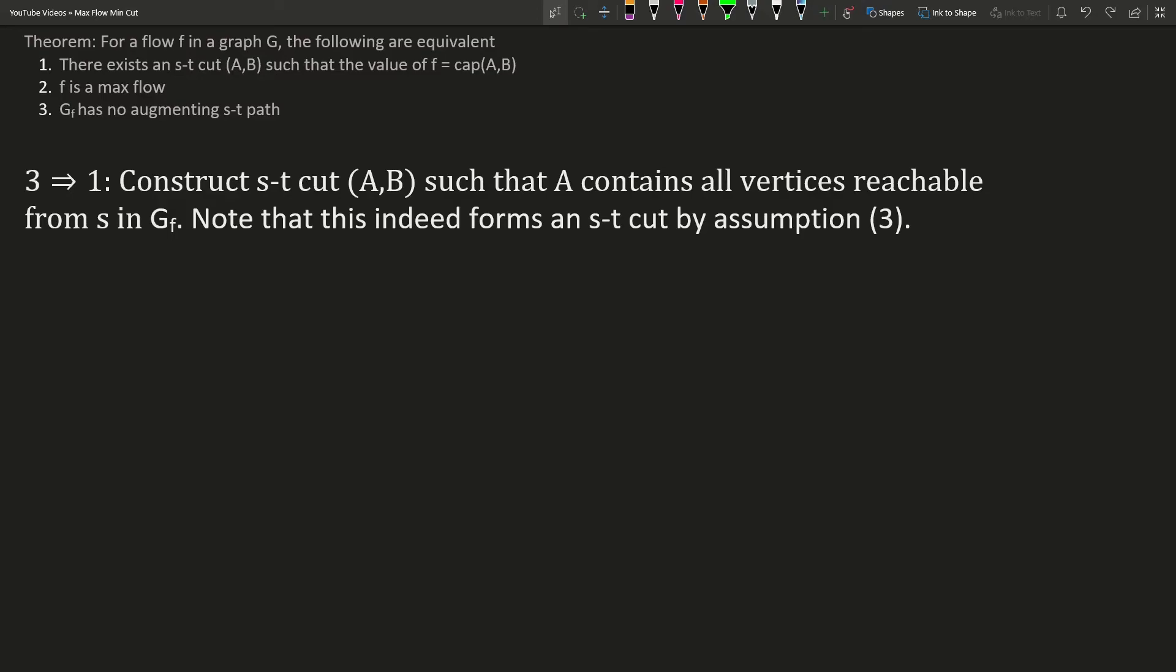Note that this partition is indeed an ST cut, because by assumption there is no augmenting ST path in the residual graph, so the sink is not reachable from the source. Together with the fact that the source is trivially reachable from itself, we get that the source is in A, and the sink is in B.